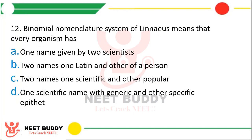Question 22. The binomial nomenclature system of Linnaeus means that every organism has: Option A, One name given by two scientists; Option B, Two names, one Latin and other of a person; Option C, Two names, one scientific and one popular; or Option D, One scientific name with a generic and specific epithet. The correct answer is Option D, one scientific name with a generic and specific epithet.